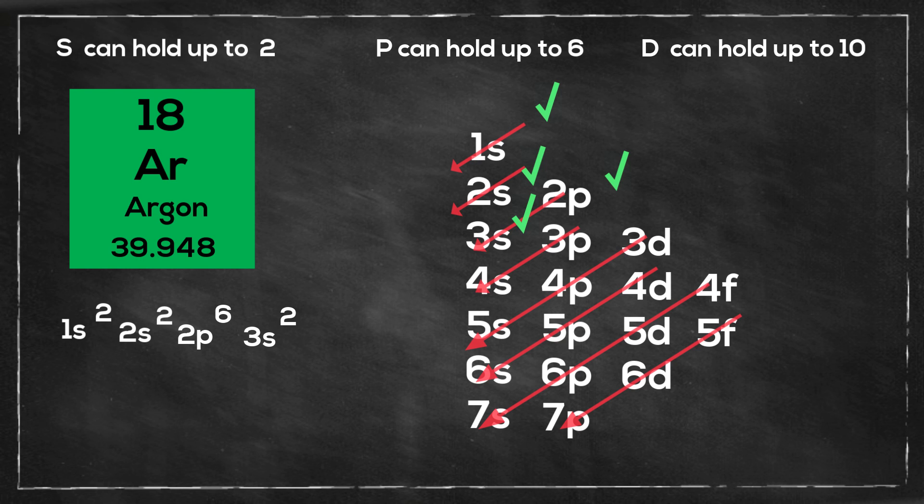And then finally, that leaves 6 left over, so it will be 3p6, and here it is drawn as a noble gas, using the noble gas notation.